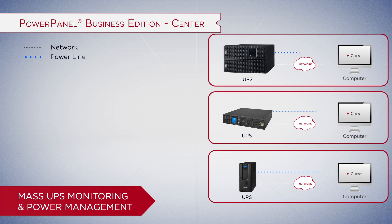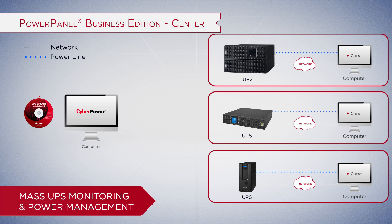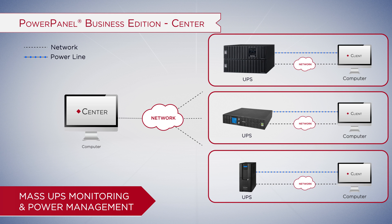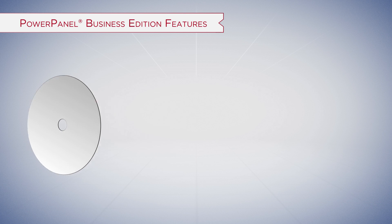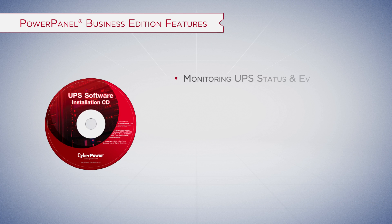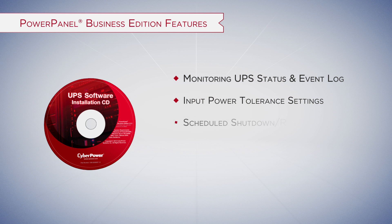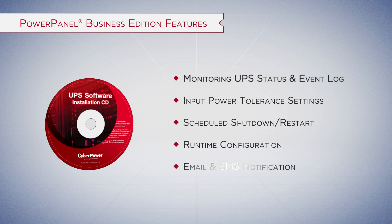As your business grows to include multiple computer systems, installing Center within a remote computer allows you to easily carry out mass UPS monitoring and power management. The Business Edition includes features such as monitoring UPS status and event log, input power tolerance settings, scheduled shutdown and restart, runtime configuration, and email and SMS notification for UPS events.